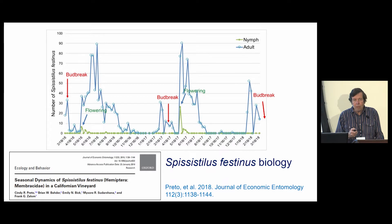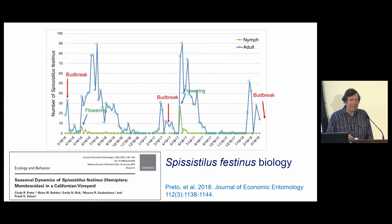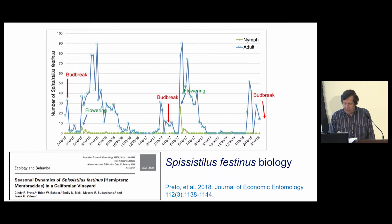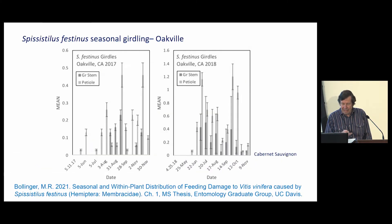This work was done by Cindy Prito, who was a graduate student in our lab at the time, and it's by far the most detailed study of three-cornered alfalfa hopper in California and certainly on grapevines. She'll be talking a lot more about this later today, so I don't want to go through this in detail right now.